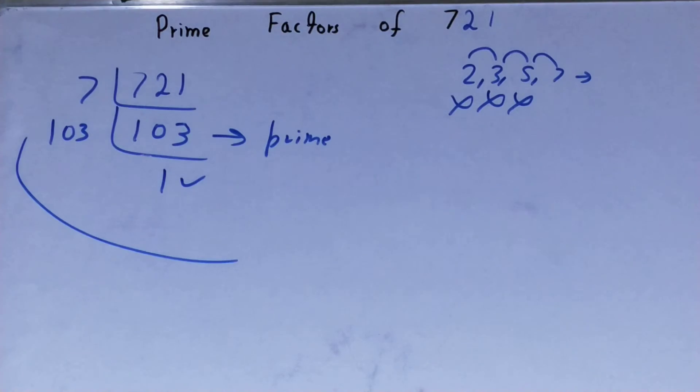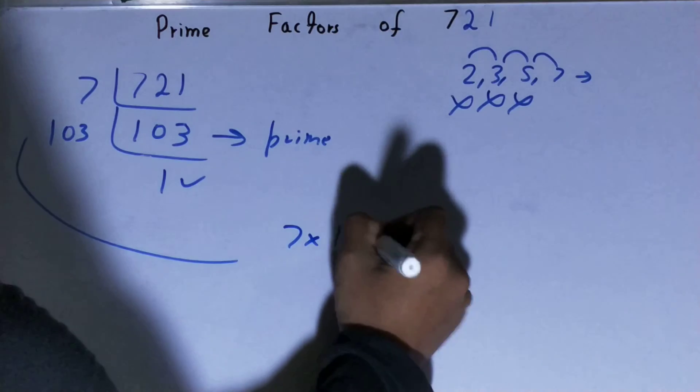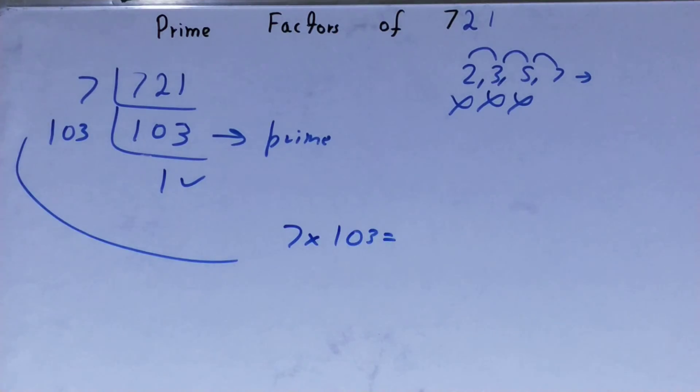Once you are left with 1, the work is done. And whatever you have on the left-hand side will be the prime factors of the number 721, that is 7 × 103.